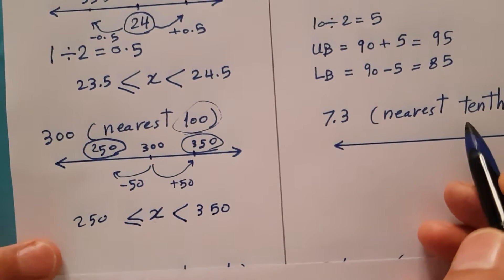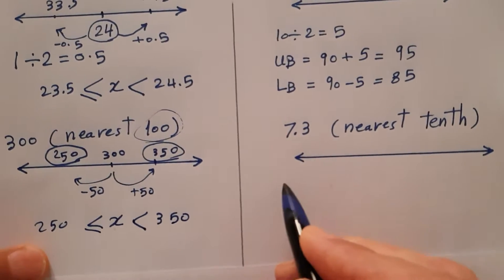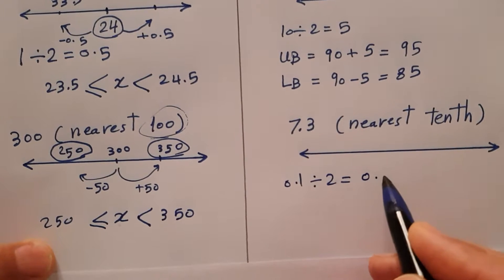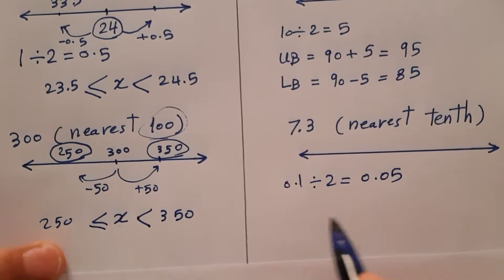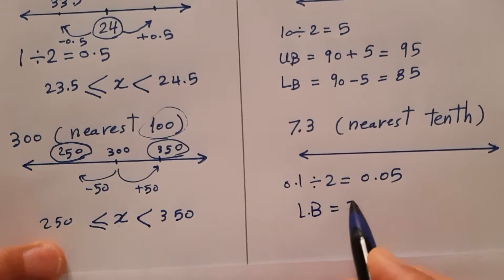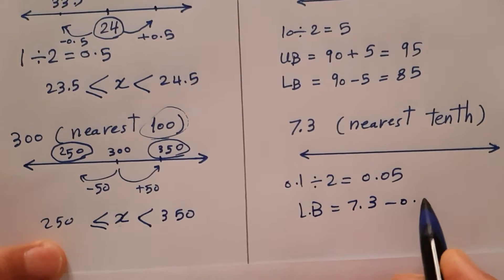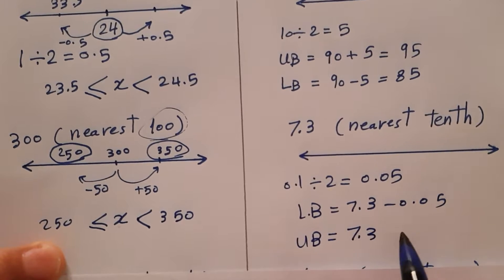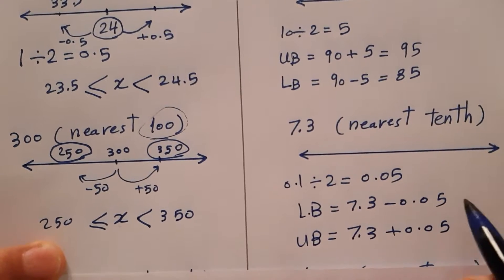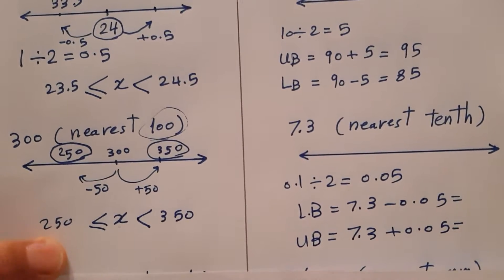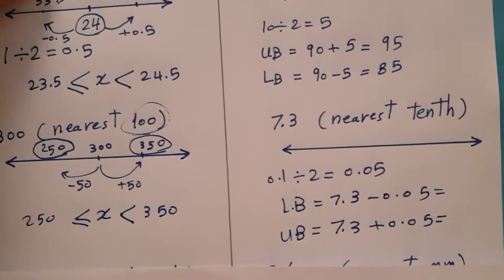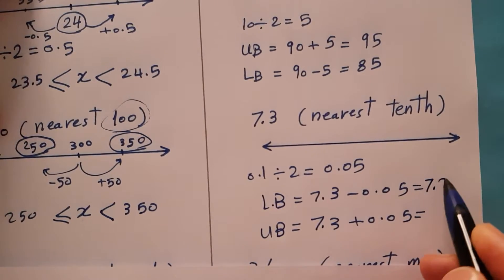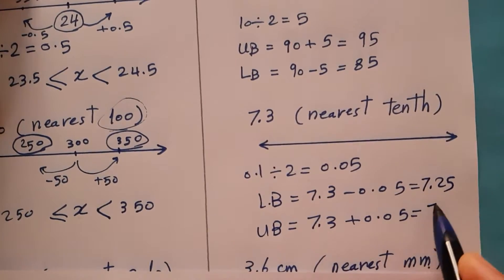7.3 to the nearest tenth. Tenth means 0.1. If you divide 0.1 by 2, you get 0.05. So the lower bound is 7.3 minus 0.05 and the upper bound is 7.3 plus 0.05. This gives us 7.25 and 7.35. That is the idea to calculate the lower bound and upper bound — very easy.